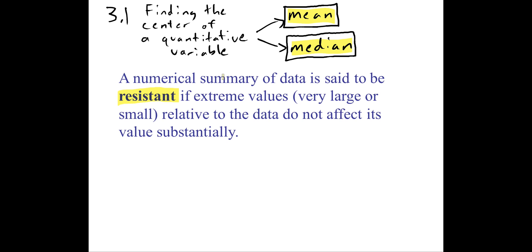A numerical summary is said to be resistant if extreme values — that is, very large values or very small values — do not affect the value of that numerical summary substantially. Let's look at an example of the mean versus the median and see which one is more resistant.